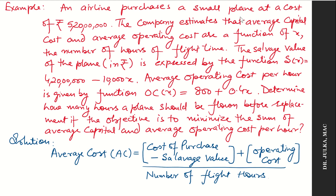Example 2. An airline purchases a small plane at a cost of 5 crore 20 lakhs. The company estimates that the average capital cost and average operating cost are functions of X, the number of hours of flight time. The salvage value is S(X) = 4 crore 20 lakhs − 10,000X, and the average operating cost per hour is OC = 800 + 0.4X. Determine how many hours the plane should be flown before replacement to minimize the sum of average capital and average operating cost per hour. The average cost equals the cost of purchase minus salvage value plus operating cost, divided by the number of flight hours.